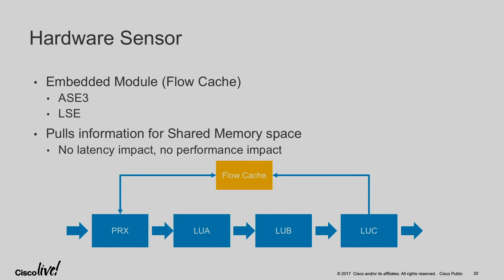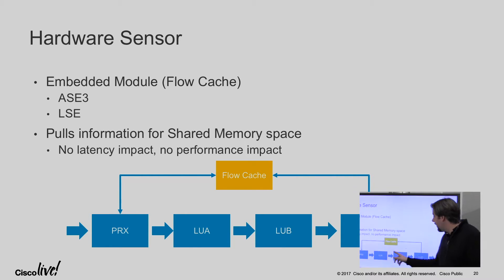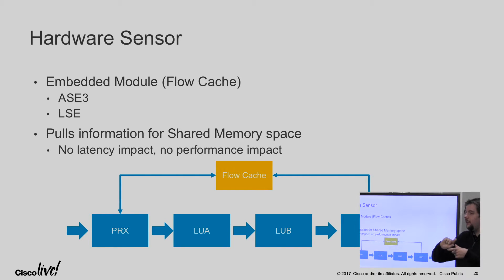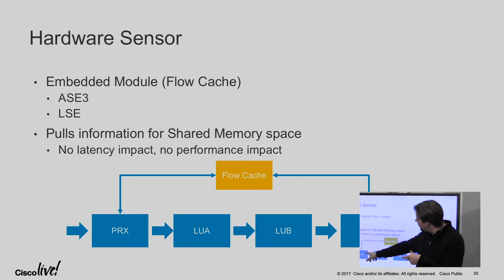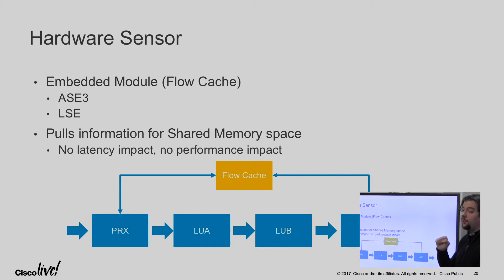In terms of the ASIC — and this is valid for the Nexus 9K platform, specifically AS3, LSEs, or Sugar Bowl and Davos as they're known internally — this is the normal pipeline where your traffic goes through. We actually place a flow cache within the same ASIC in a different module. This module has access to the shared memory of the parser and the lookup units, and from there we pull what we need. That's how we can see everything at line rates on these platforms.